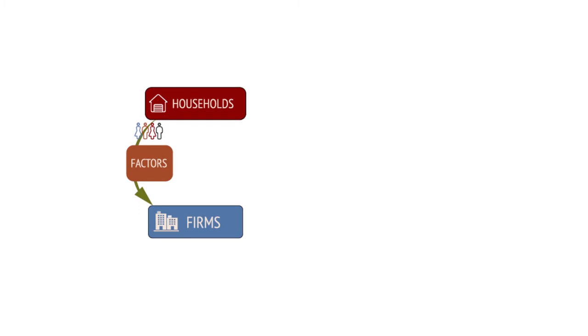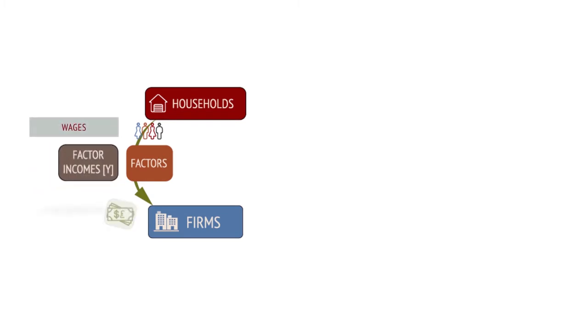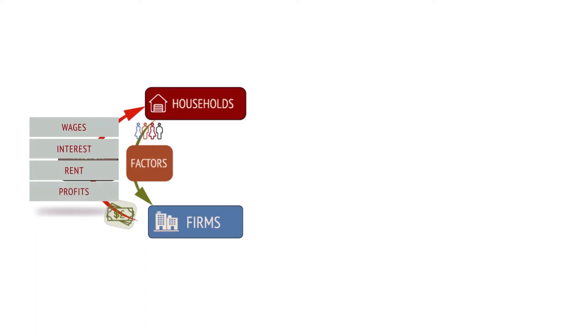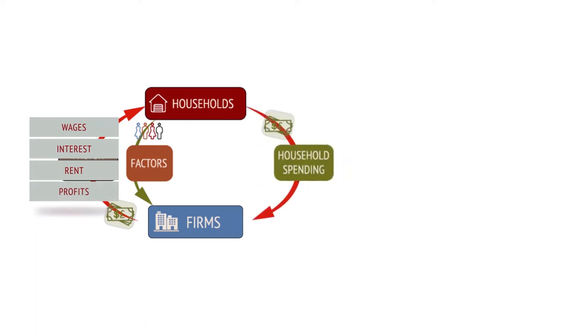In return, they receive factor incomes: wages, interest, rent and profits. This income is converted into expenditure to buy goods and services from firms.